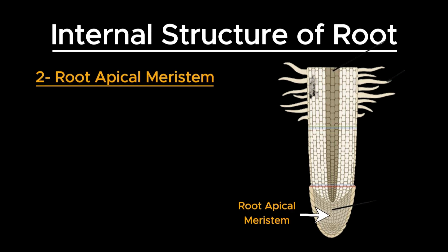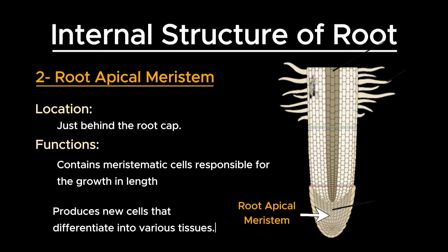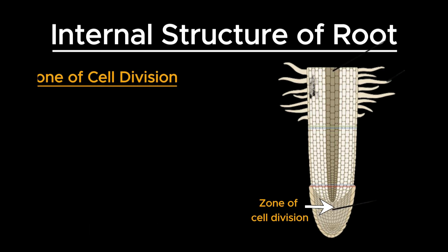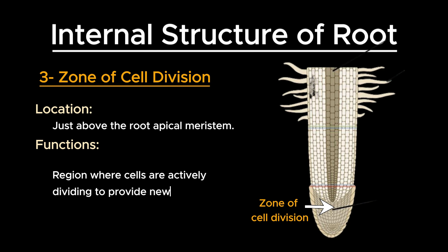Next is the root apical meristem. It is located just behind the root cap and contains actively dividing cells responsible for the growth in length of the root. It produces new cells that differentiate into various tissues. The third zone is the zone of cell division, just above the root apical meristem. This is the region where cells are actively dividing to provide new cells for root growth.